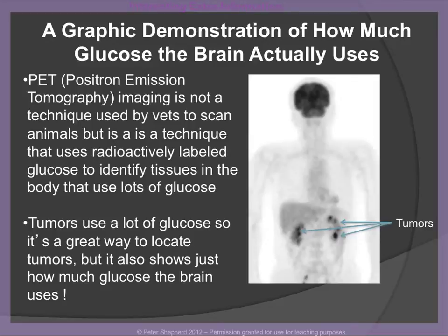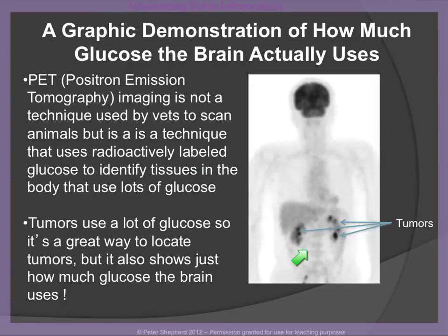There is a form of imaging technique called PET — positron emission tomography — not related to animals. Basically, people consume glucose that has had a special radioactive label put onto it, and we can scan people's bodies to pick up this radioactive glucose. Generally this technique is used to detect where cancerous tumors are in people's bodies, because tumors also consume a lot of glucose, so the glucose tends to hang around where these tumors are.